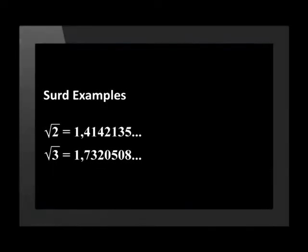The square root of 2 is 1.4142135 and continues on. The square root of 3 is 1.7320508 and continues on. Both of these surds have their values approximated by rounding to a certain number of decimal places.